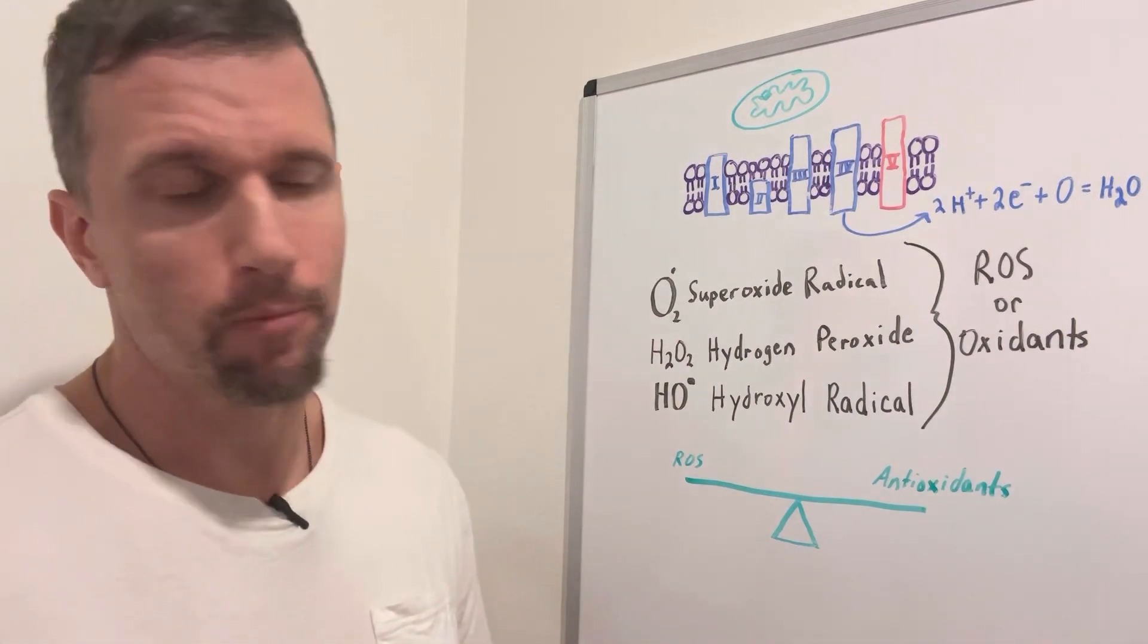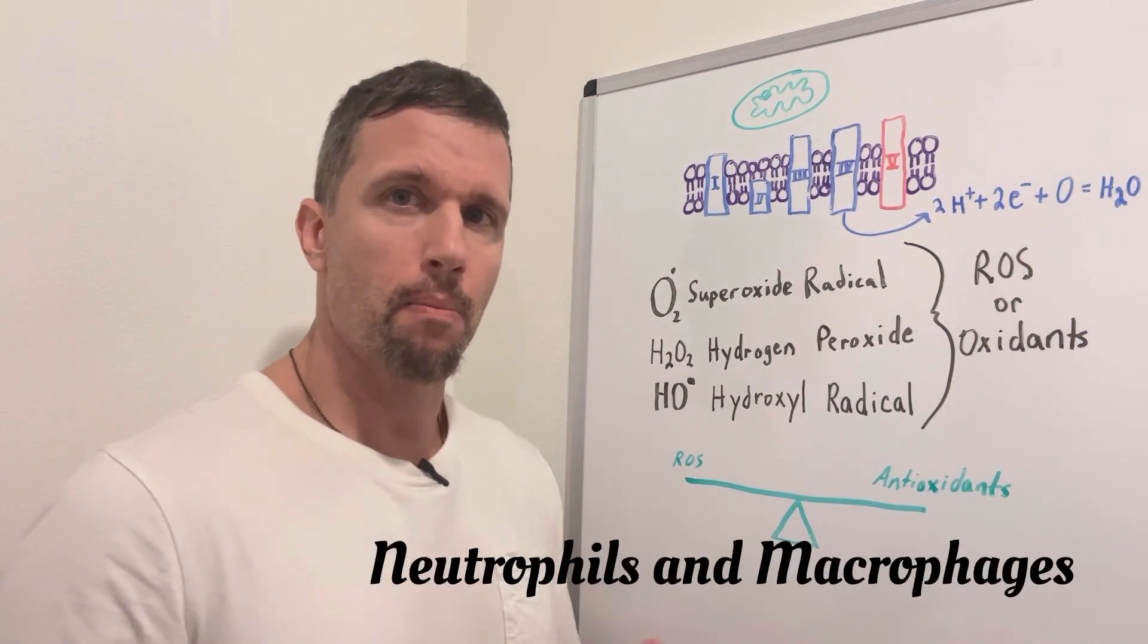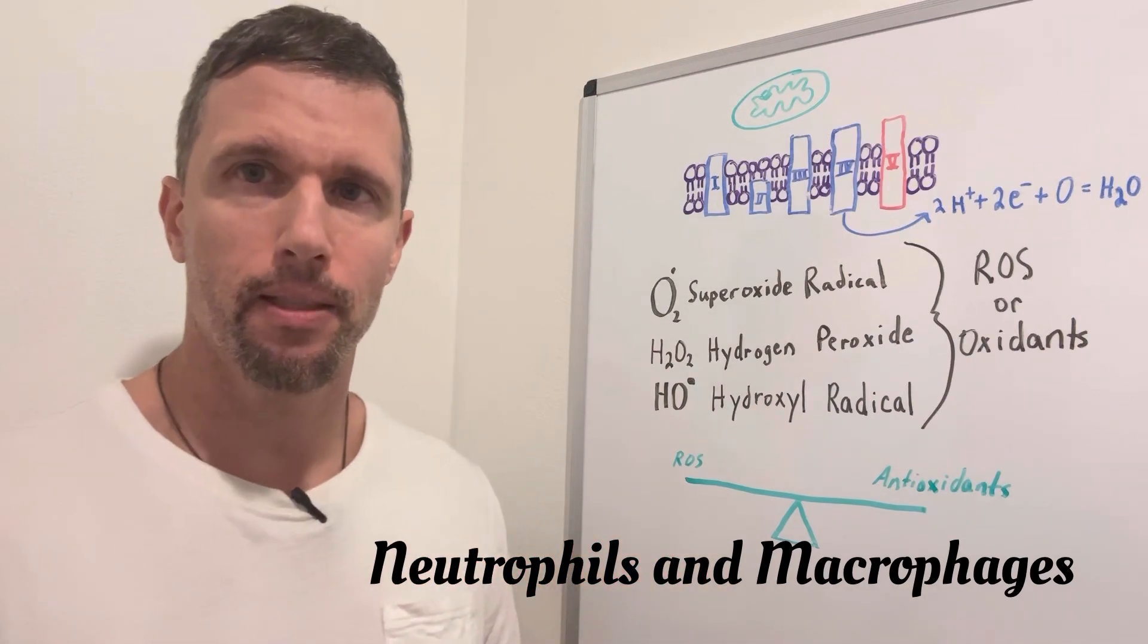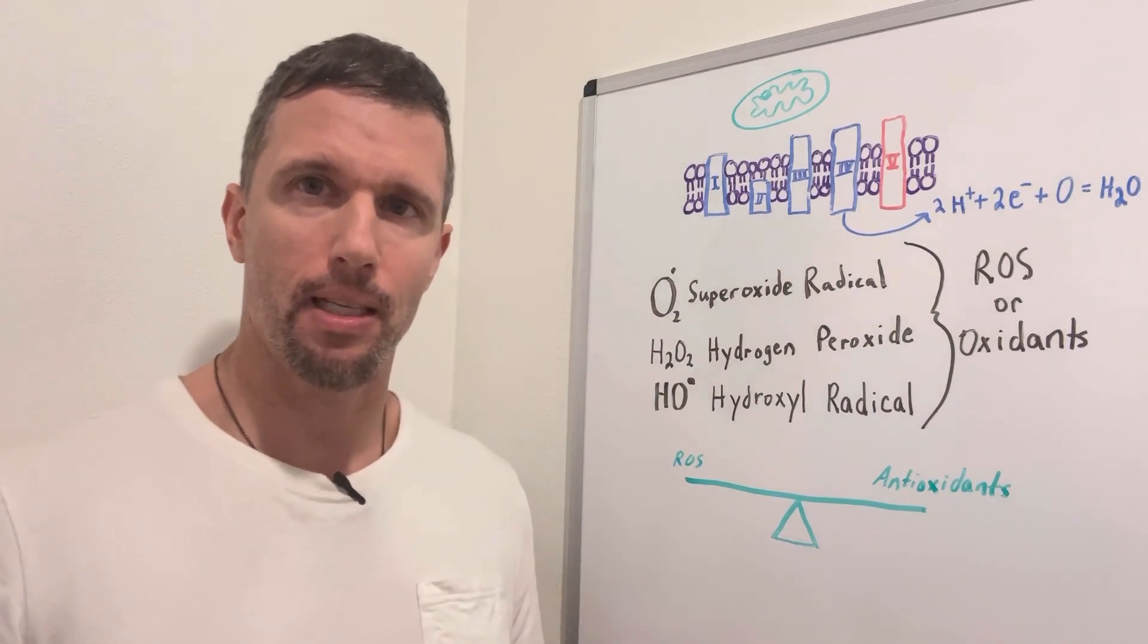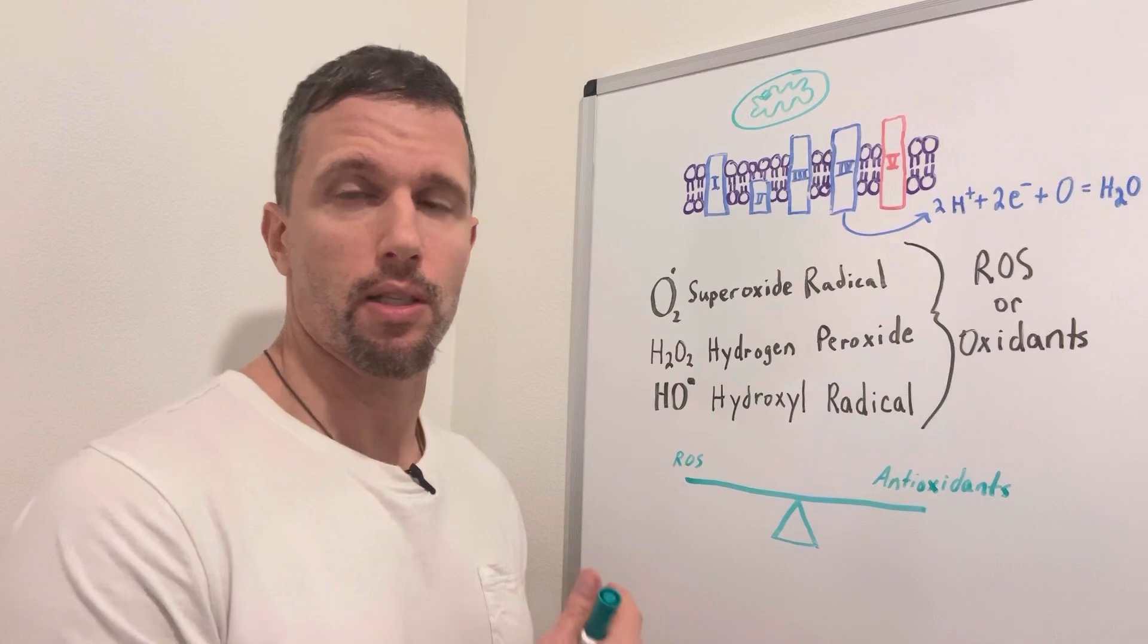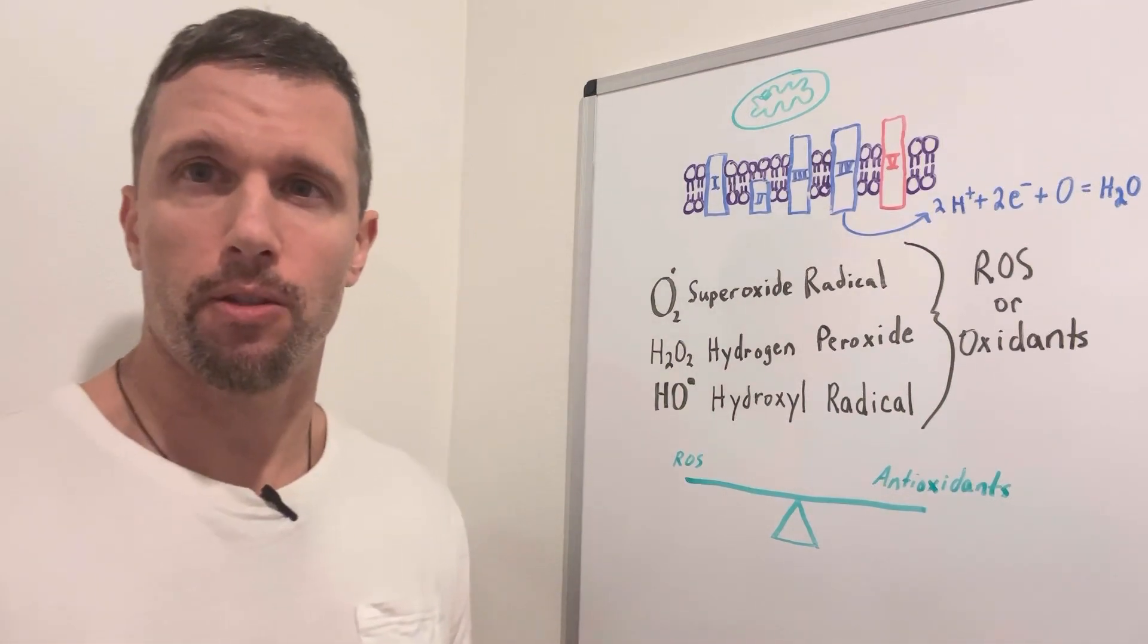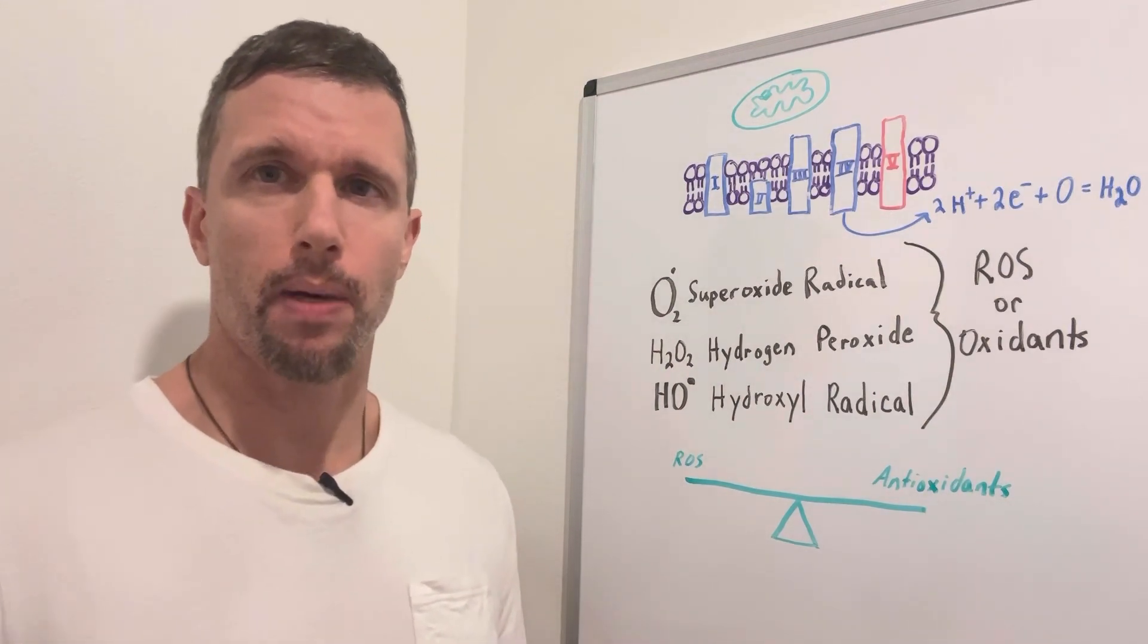So reactive oxygen species aren't always bad. Our white blood cells like neutrophils and macrophages, they'll actually use these to kill off bacteria. And in fact, if you take exogenous antioxidants like vitamin C and vitamin E, it can have deleterious effects on this immune system's ability to fight off cancer. So I wouldn't recommend based on the research taking a whole lot of these antioxidants unless you have a purpose behind it.